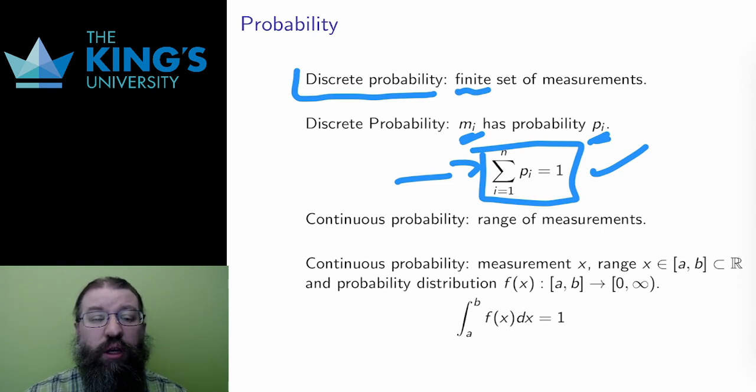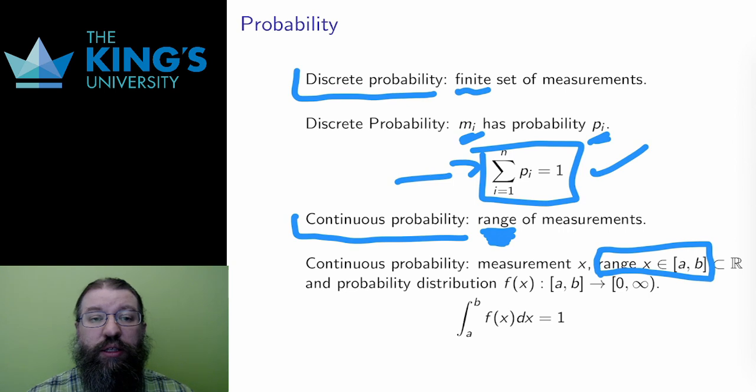Some measurements, however, are better suited to continuous probability. Unlike discrete probability, continuous probability allows for a whole real number range of measurements. A standard example is the height of members of a population. In a large population, the heights will vary in a range. Mathematically, it makes sense to consider this range as an interval in the real number line, all possibilities between a minimum and maximum height. In this way, there are now infinitely many measurements.